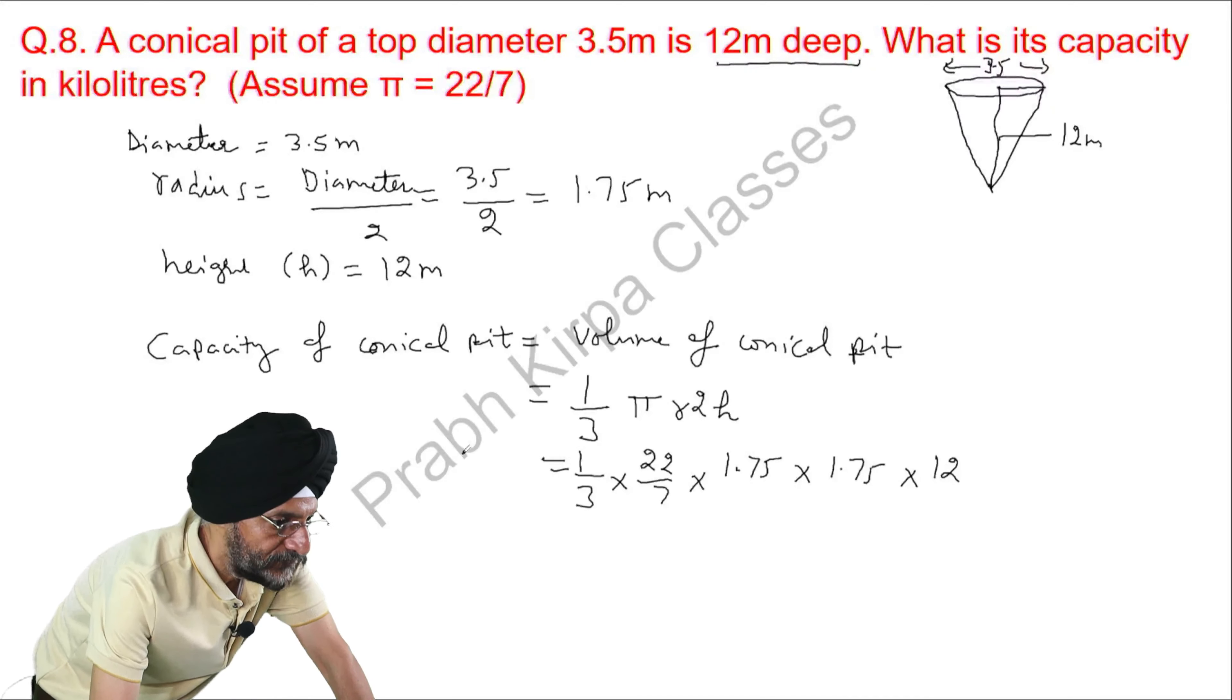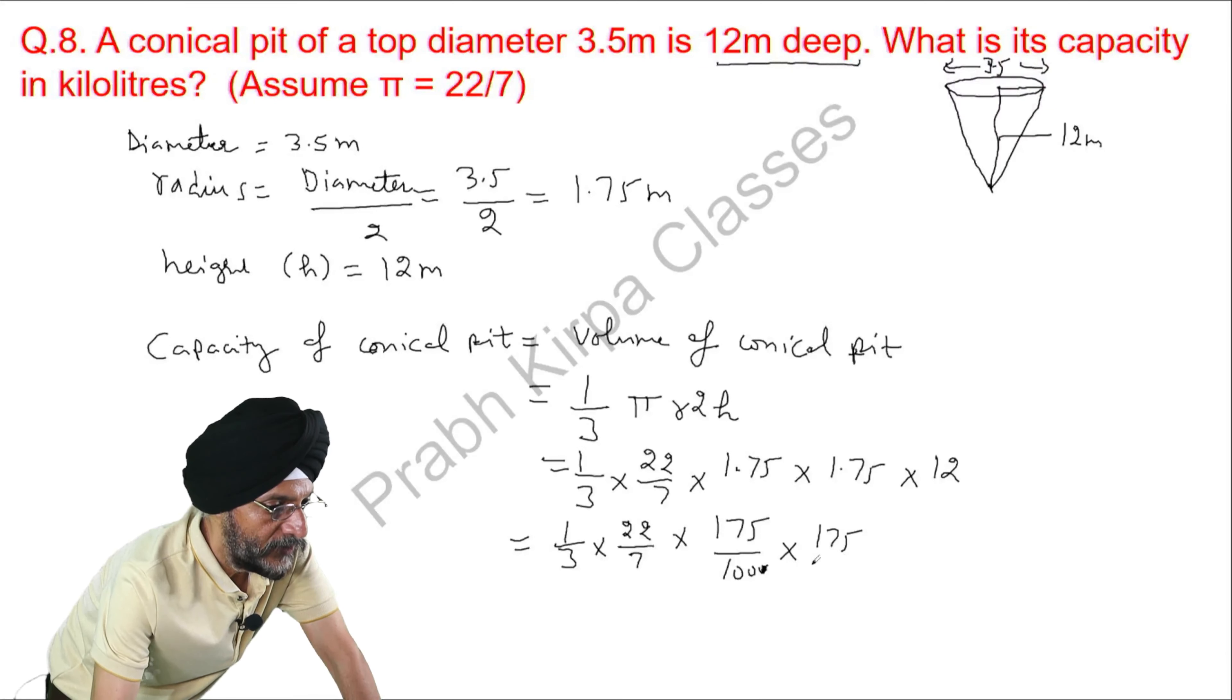We will solve it. 1 over 3, 22 over 7, 175 over 100, 175 over 100 into 12.